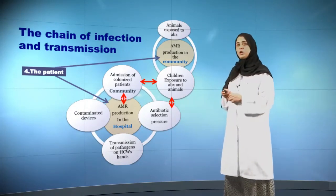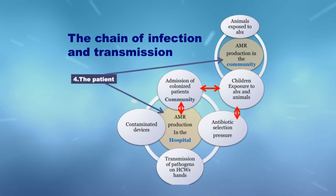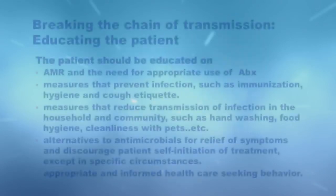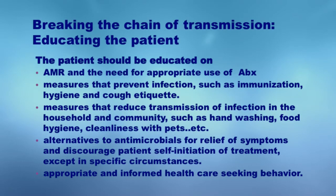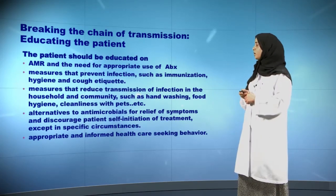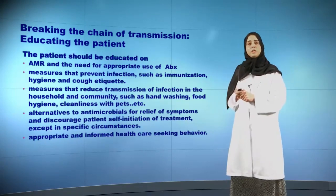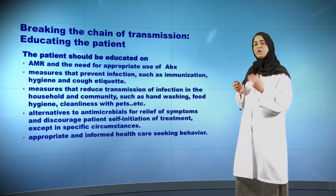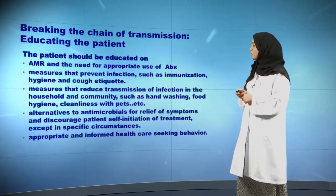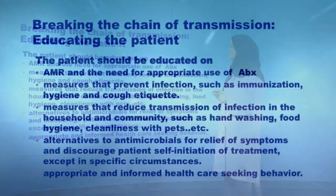The chain of infection can also be broken at the patient level. The patient requires education — even though some of you may not be aware, you do have a role in speaking to your patients, educating them about antimicrobial resistance, and encouraging them to accept the appropriate antibiotics. There need to be measures for preventing infections other than antibiotics, such as immunizations, hand hygiene at home, cough etiquette, not sneezing in your hand and touching surfaces, and making sure that when you are ill you do not mix with other people.